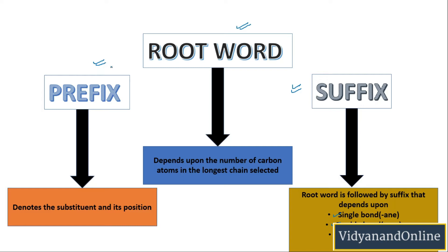Now let's talk about the prefix. Sometimes your chain has branches or halogen groups, so you write them as a prefix by mentioning the position on the carbon chain where they are placed. You will not always get a prefix, but the root word and suffix will always be present. The prefix denotes the substituent and its position — a branch on the chain is what we call the substituent.